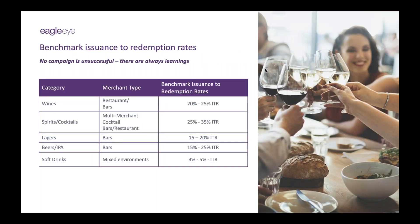We're very big believers that no campaign is unsuccessful. As long as you come at it with a test and learn approach and carry it through an always-on strategy, there's always something you'll be able to learn and always an insight you can take from the campaign that will inform future offers. We've done many of these across lots of different categories and merchant types, and have some ideas on benchmark issuance to redemption rates across these businesses to give you an idea on what kind of return to expect. We always go through a very detailed forecasting process with our clients before launching, just to give you an idea of what we think performance will look like and make sure we're all agreed on success metrics.